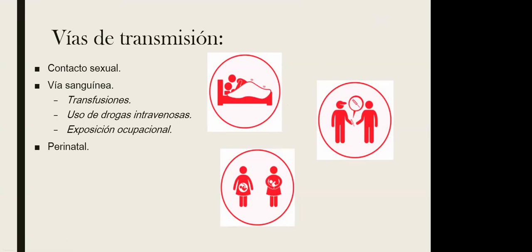La vía sanguínea incluye transfusiones de personas infectadas donde no se detectó el VIH, el uso de drogas intravenosas compartidas, común en zonas de bajos recursos, y la exposición ocupacional para médicos y personal de salud con contacto directo con el virus. De estas tres vías sanguíneas, la exposición ocupacional es la menos común.